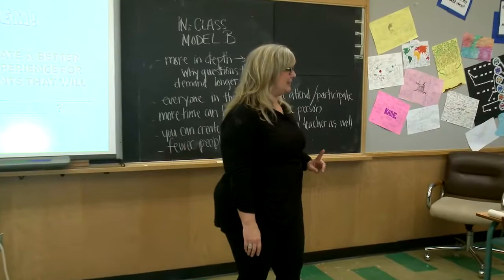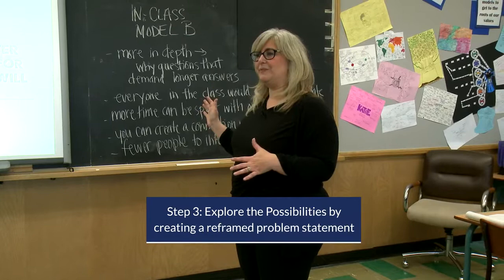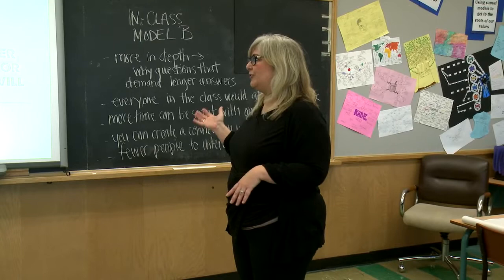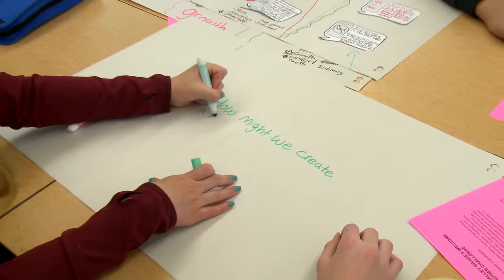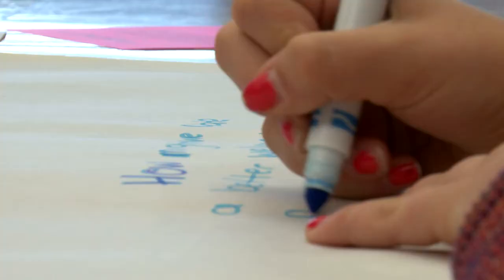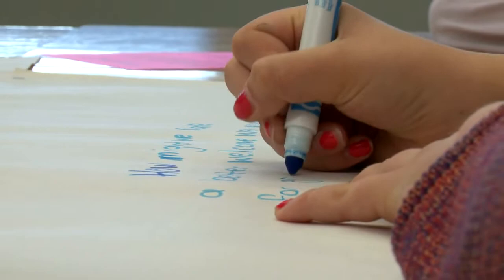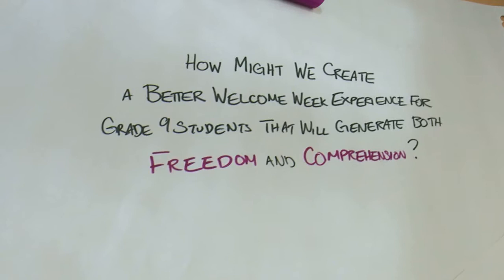I want you on a new piece of paper to write this sentence: 'How might we create a better welcome week experience for grade 9 students that will generate both X and Y?' — where X and Y are the two words you came up with. I would usually take a pros and cons list for each tension and just take the one with the most pros as the answer. Whereas this approach, you're completely dissecting it — looking at stakeholders and looking at things you love.